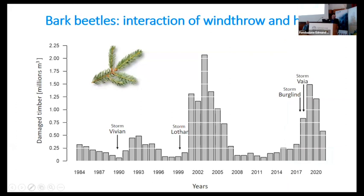This is a nice series showing cubic meters of damaged timber during the last 33 years. After the storms Vivian, Lothar, Brooklyn, and Vaia, there was always overpopulation and gradation of bark beetles, amplified by drought effects. The summer heat of 2003 and summer heat of 2018 amplified this gradation quite heavily.